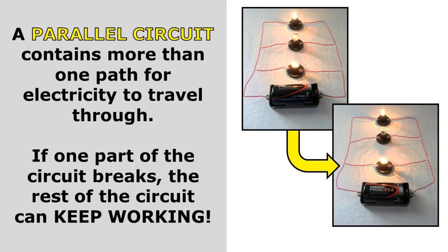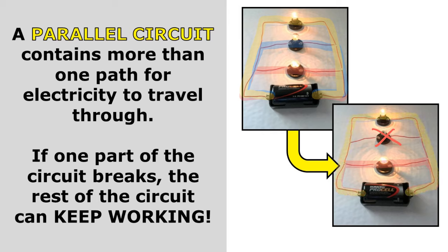A parallel circuit contains more than one path for electricity to travel through. In this top picture, electricity could travel one way through the circuit, or through the middle part, or through the top part — those are three different paths. In a parallel circuit, if one part of the circuit breaks, the rest of the circuit can keep working. In this bottom picture, the middle bulb is broken, but the bottom and top light bulbs are still glowing because electricity can go from the battery through those light bulbs and back to the other side of the battery without having to go through that gap.